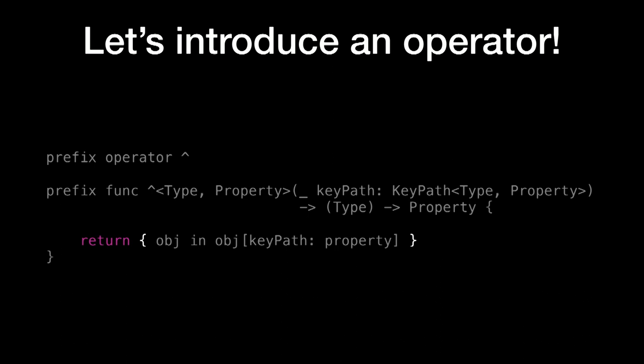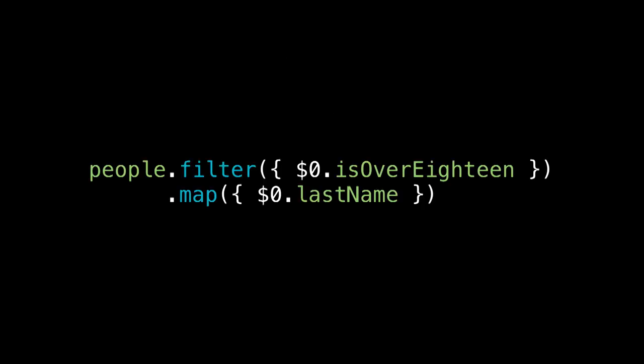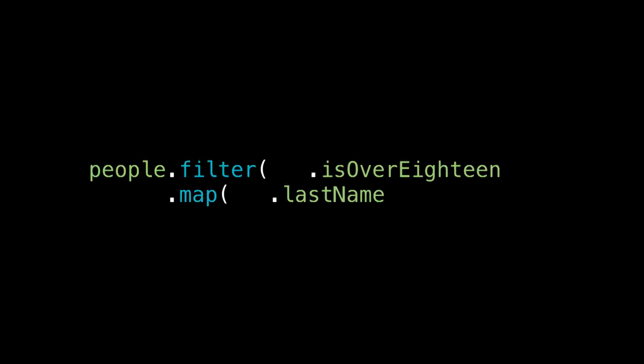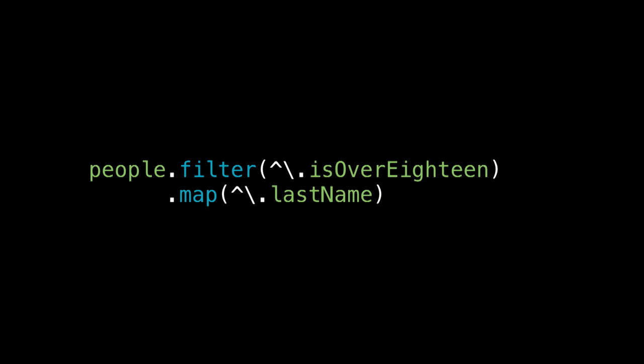How do we implement this? We return a function that takes an object and invokes the KeyPath on it — nothing fancy. But with this, we're now able to turn the original closure-based code into KeyPath-based code with just one extra character added — the operator. Every single function in the standard library that expects a getter closure can now work with a KeyPath.